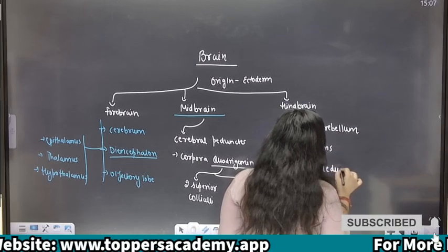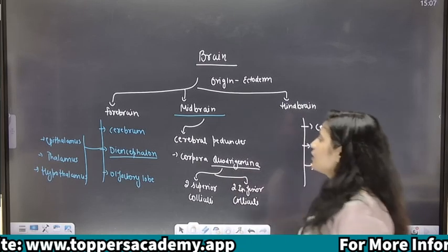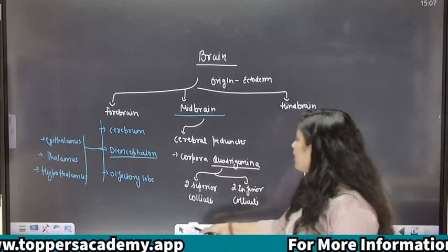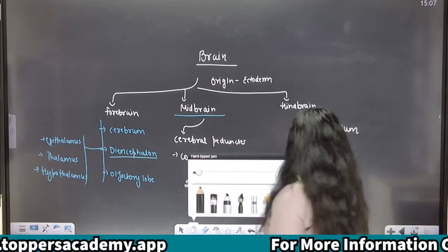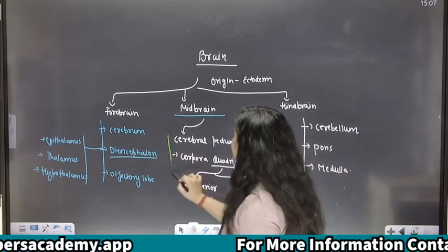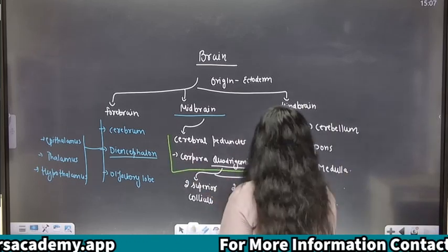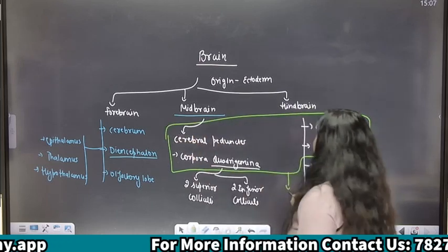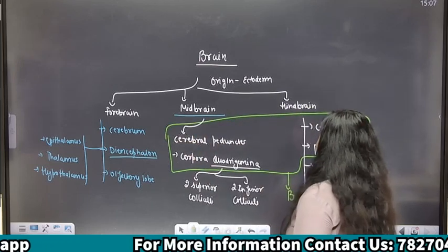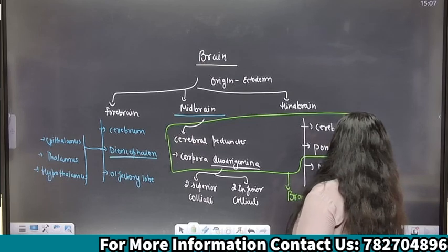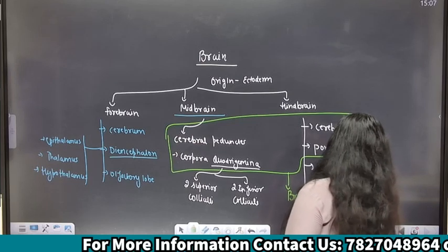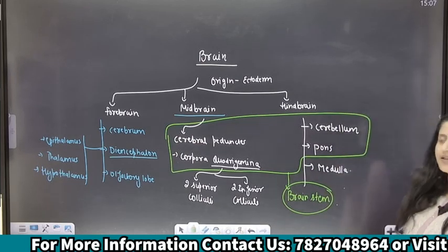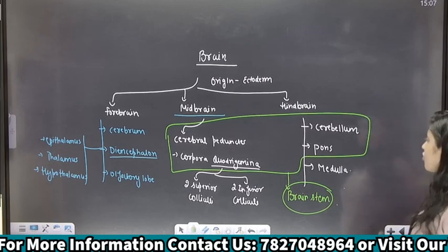So yeh sab aapke brain mein hain. Yeh baat yaad rakhna: cerebral peduncle, corpora quadrigemina, pons, and medulla — what do they form? They form the brain stem. Yeh brain stem ka formation karte hain.